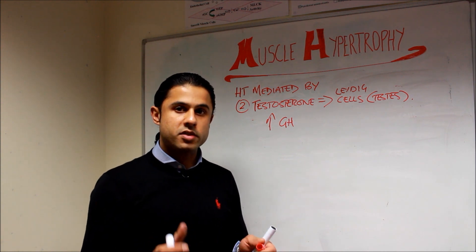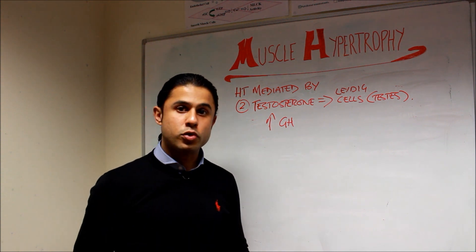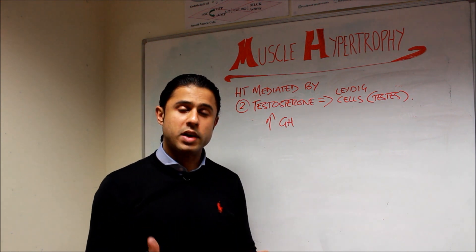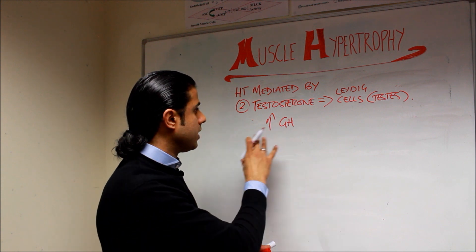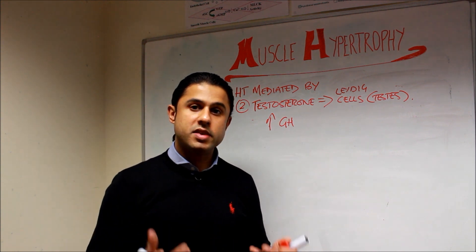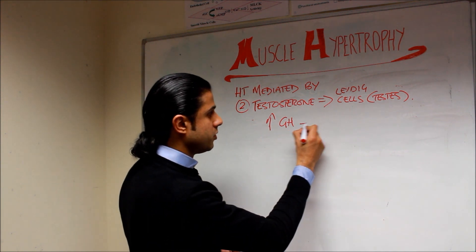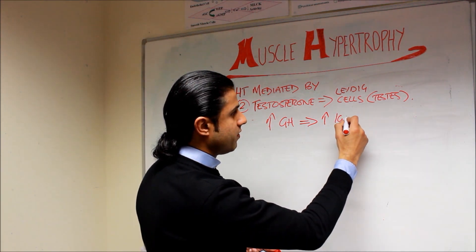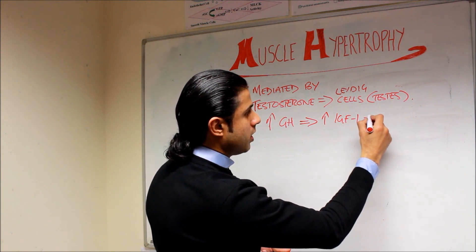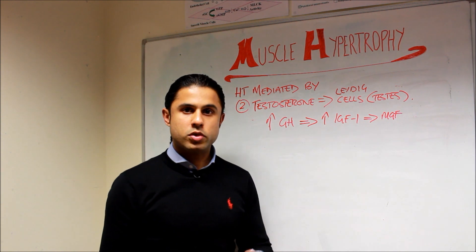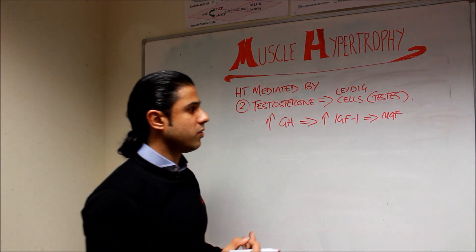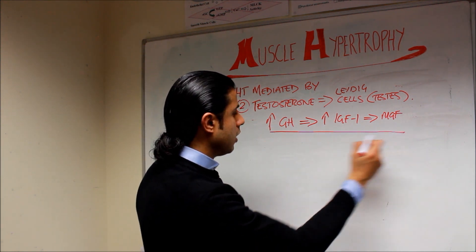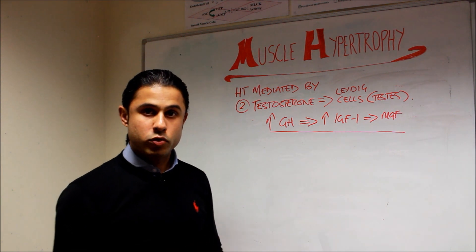A lot of research is being done on the effects of growth hormone following resistance training. Interestingly, large amounts of growth hormone are released from the pituitary gland in the brain while we sleep, producing systemic effects. One of those effects is that growth hormone increases the conversion of IGF-1 into mechano growth factor, so there is a pathway where growth hormone increases IGF-1 to MGF, leading to increased protein synthesis.